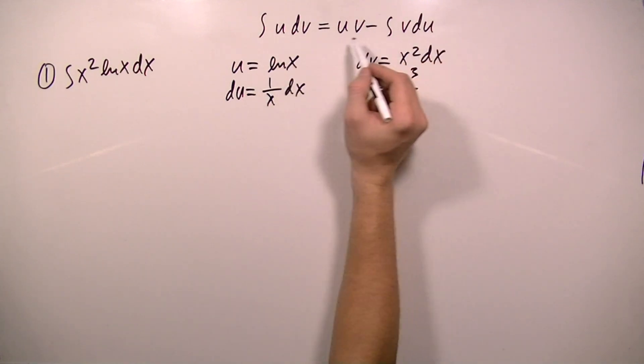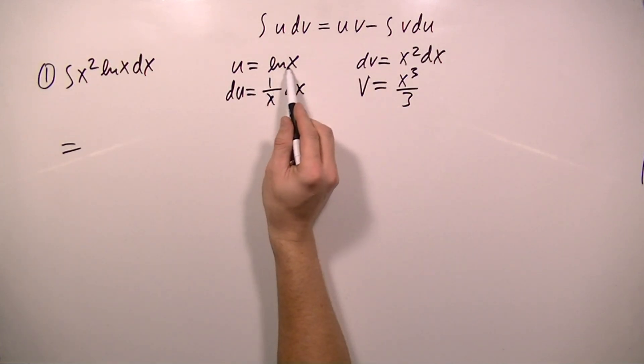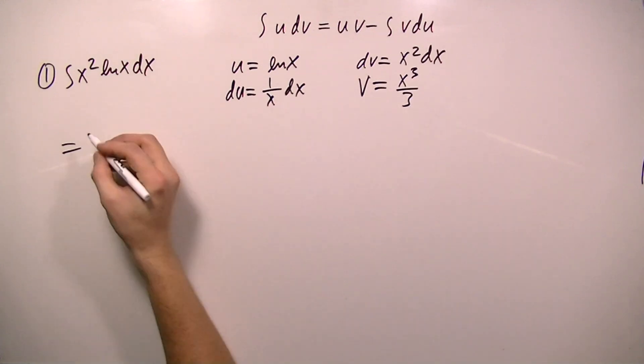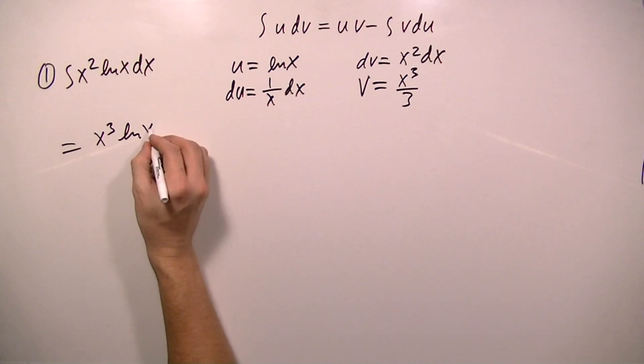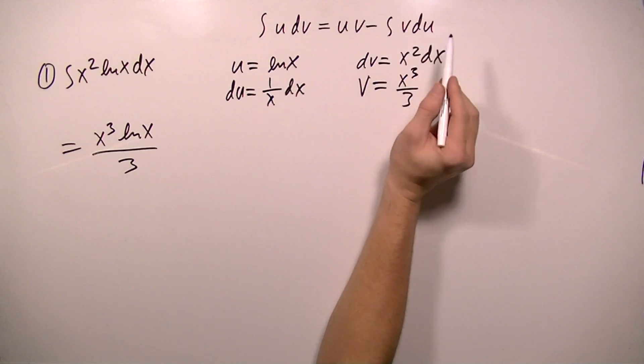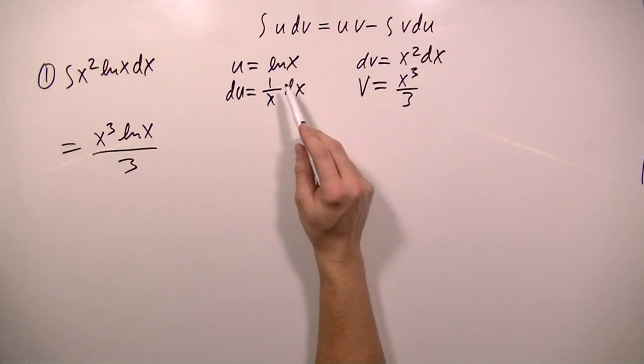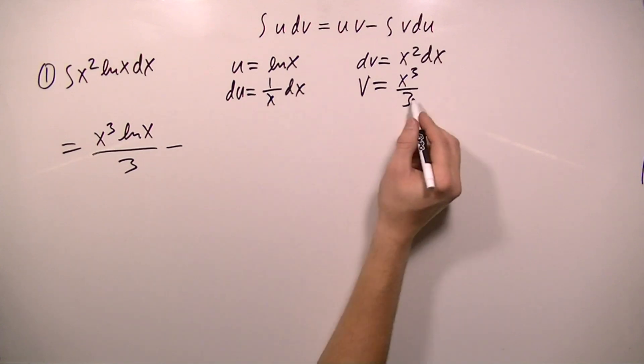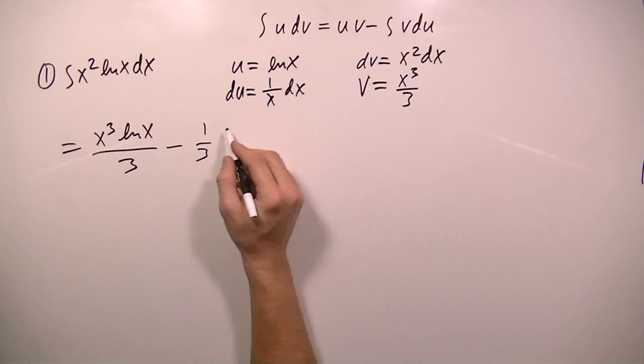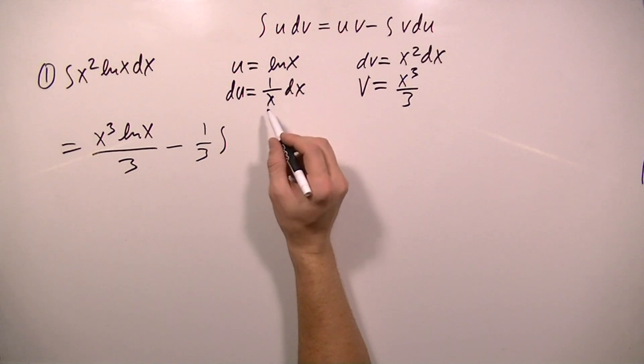Using our formula for integration by parts, our integral will be equal to u times v, which is ln x times x cubed over 3. I'll write this as x cubed ln x all over 3. Then I subtract the integral of v times du. When I do v times du, the x will cancel with x cubed and give me x squared, all over 3. So I'll factor out 1 over 3: one third times the integral. And x cubed cancels with dx, reduces to just x squared dx.